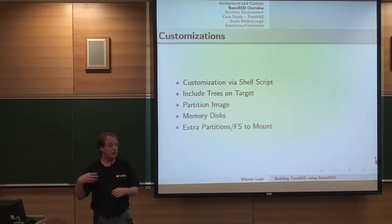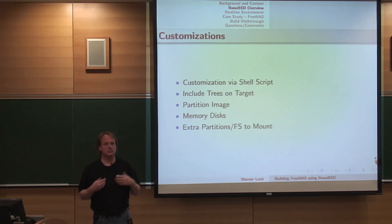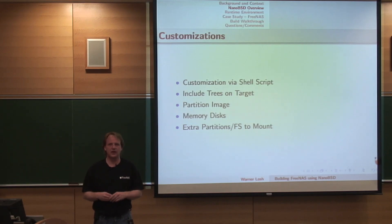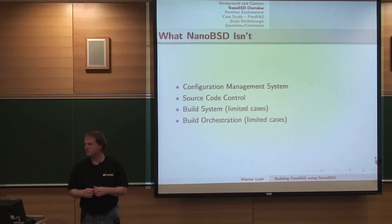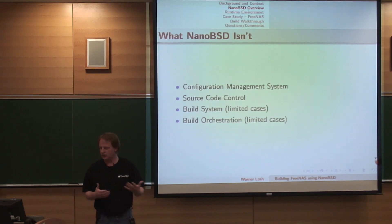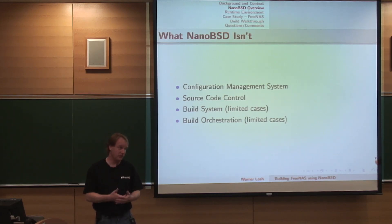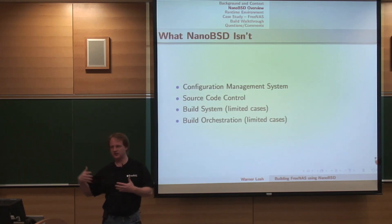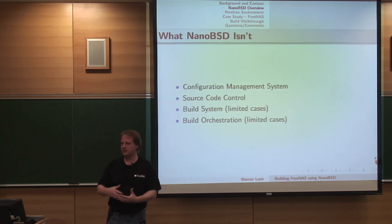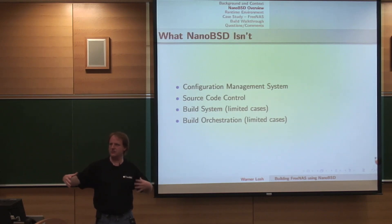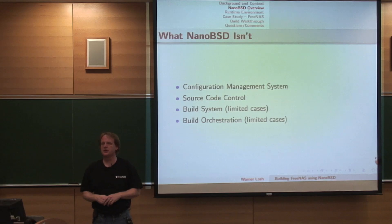A number of customizations include permissions to set, tar files to include on the system, other programs to build, and that kind of thing. Now, what are the sorts of things that aren't the target for NanoBSD? The first thing is it's not a configuration management system, and it's not a source code control system. The thing that it's building exists outside of NanoBSD. So if you want to pull in what you're building from a single script, build it, and release — that kind of configuration management architecture is done external to NanoBSD.